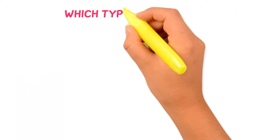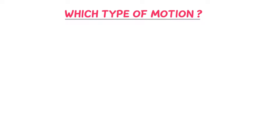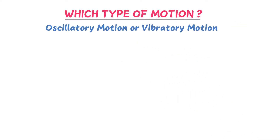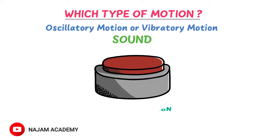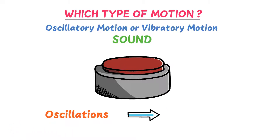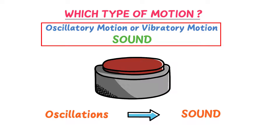Now the second important question is: which type of motion produces sound? The answer is very simple — it is the oscillatory motion or vibratory motion that produces sound. What is oscillatory or vibratory motion? Consider the motion of this object: it moves up and down from a fixed point. Such type of motion is known as oscillatory motion or vibratory motion. Remember that when there is oscillatory motion — simply oscillations — there is sound. No oscillation means no sound. Thus, sound is produced by oscillatory or vibratory motion.